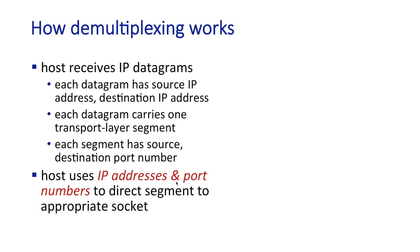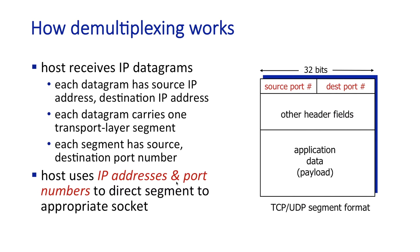Let's take a deeper dive into how demultiplexing works. When a host receives an IP datagram, each datagram has a source IP address — the IP address of the sender — and a destination IP address, which is the host doing the processing. Each datagram also carries one transport layer segment, and in that segment's header, we're interested in two fields: the source port number and the destination port number. The host uses the IP addresses and port numbers to direct the segment to the appropriate socket. This works a little differently in TCP than in UDP — UDP is simpler, so let's start there.